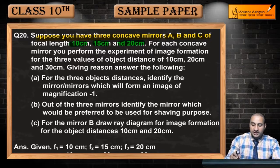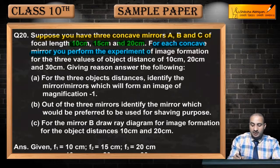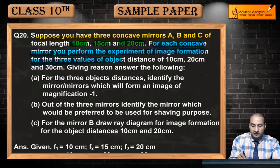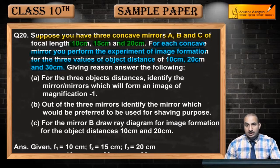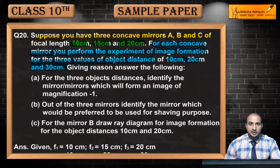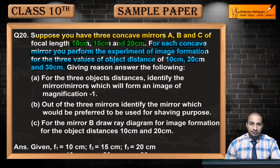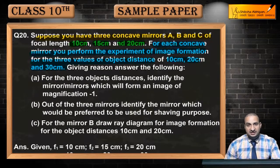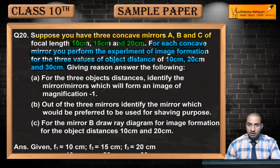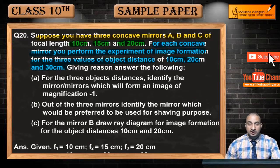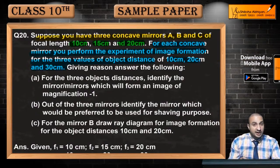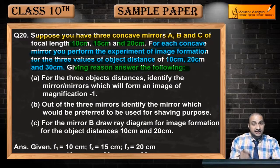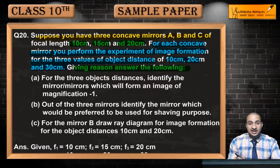For each concave mirror you perform the experiment of image formation for the three values of object distance: 10cm, 20cm and 30cm. For the first mirror you perform the image formation, first mirror ke liye jo aap lete hain object ka distance 10 centimeter, 20 centimeter or 30 centimeter. Second ke liye bhi 10, 20 or 30 centimeter in positions par aap object ko rakhte. And third ke liye, ab jo hai aapne experiment ko perform kiya, aapko kuch answer karna hai reason ke saath.